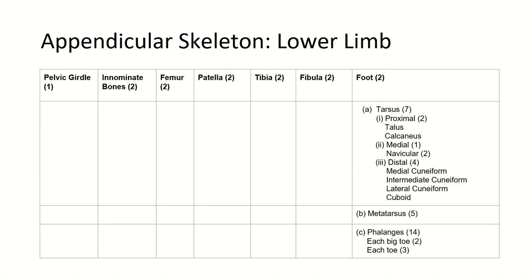About the lower limb, we have the pelvic girdle, innominate bones, femur, patella, tibia, fibula, and foot bones. Foot bones are further divided into tarsus, metatarsus, and phalanges.